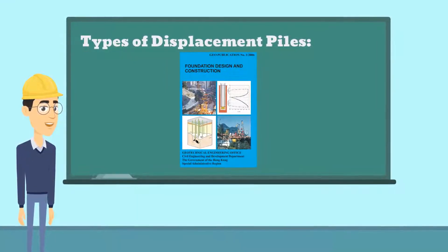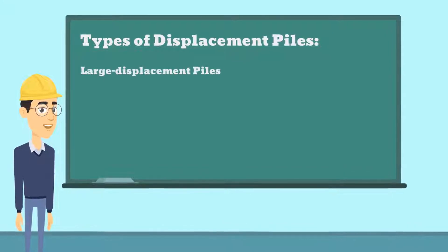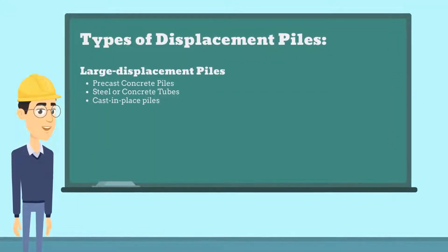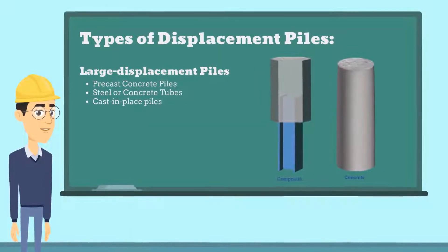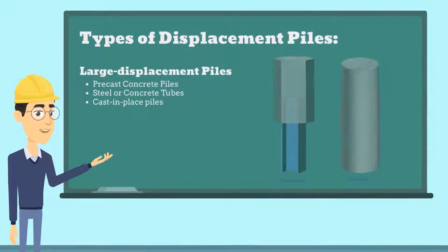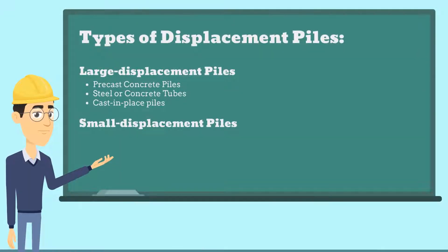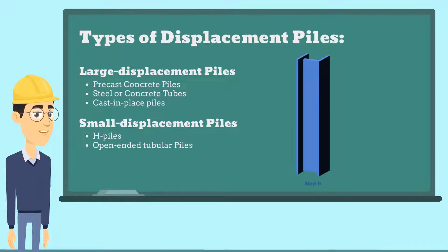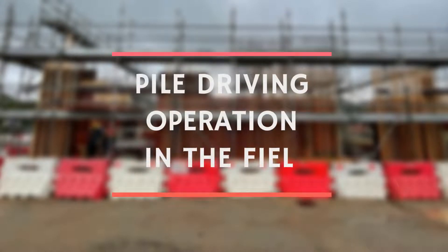The first type is large displacement piles, which include all solid piles, for example precast concrete piles and steel or concrete tubes closed at the lower end. The other type is small displacement piles, which include rolled steel sections, for example H-piles and open-ended tubular piles.